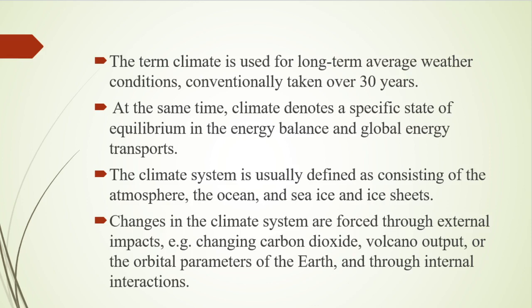The climate system is usually defined as consisting of the atmosphere, the ocean, sea ice, and ice sheets. Changes in the climate system are forced through external impacts such as changing carbon dioxide, volcanic output, or the orbital parameters of the earth, and through internal interactions.